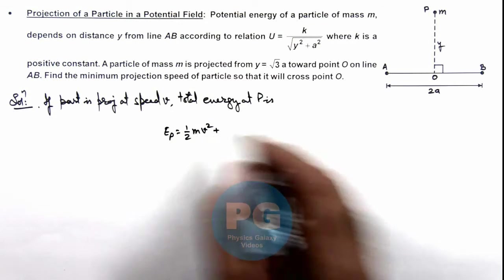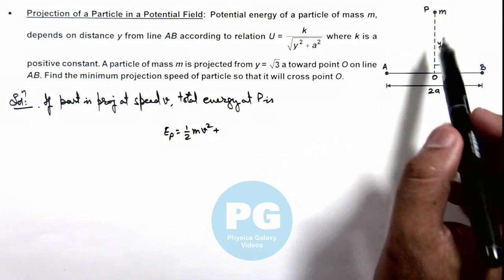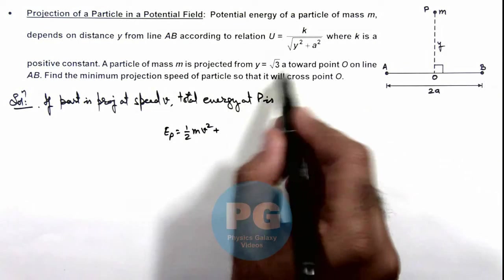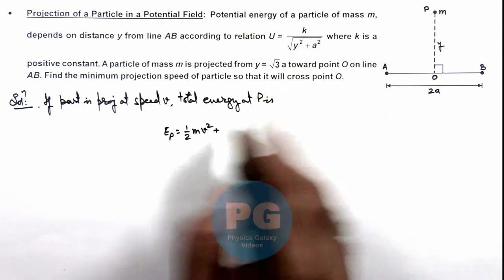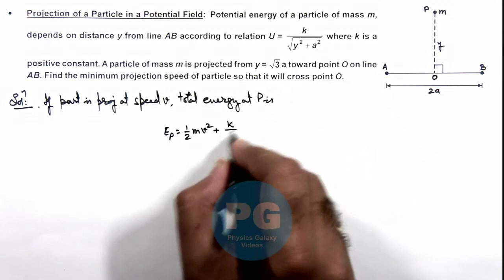Plus the potential energy at point P. Here we can see the value of y is root 3 a. If we put it here, it'll be 4a squared, and the potential energy will be k by 2a.